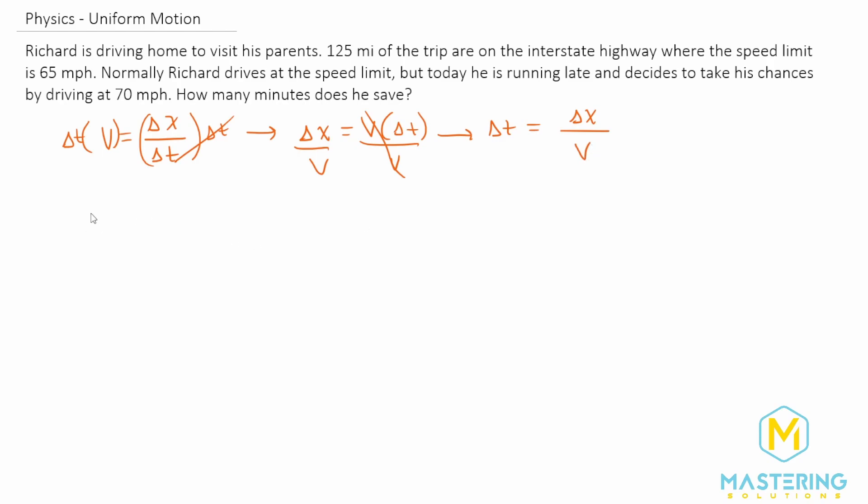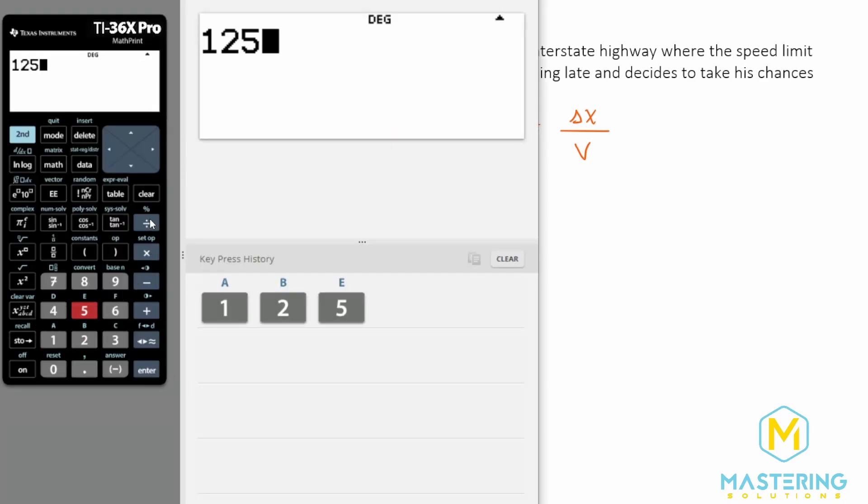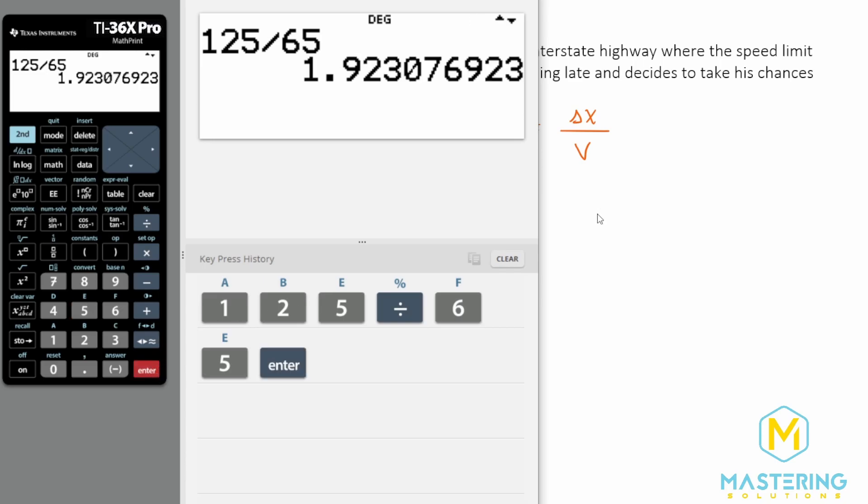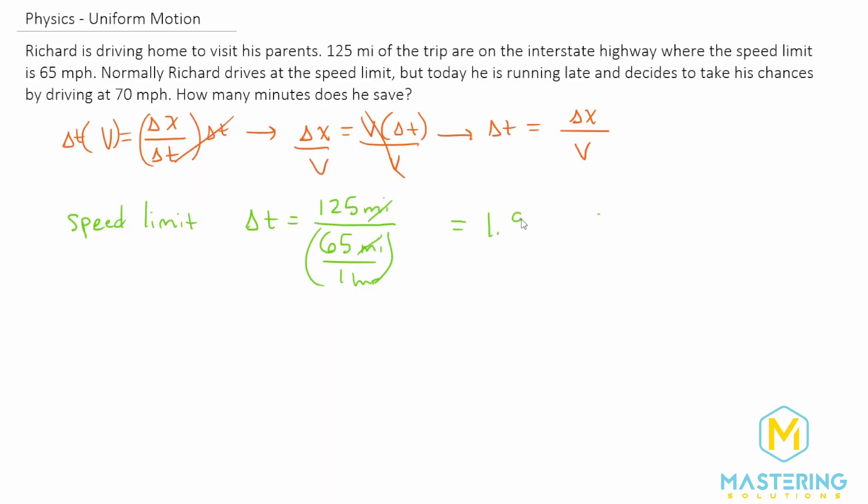So now let's figure out how long it takes him if he just goes the speed limit. So normally if he's going the speed limit we have delta t is equal to 125 miles, and they tell us that he goes 65 miles per hour. So if we're dividing by a fraction like this it's the same as multiplying by the reciprocal, which will give us, the miles will cancel out and it will leave us in hours. So 125 miles divided by 65 miles per hour gives us 1.923 hours at the speed limit.